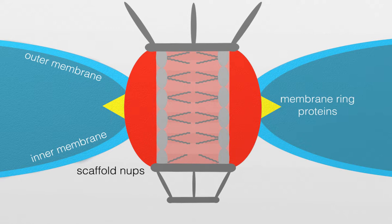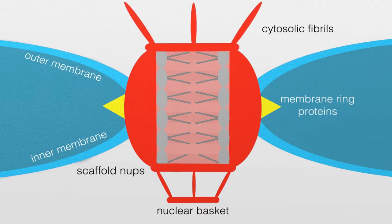On the nucleoplasmic side, the scaffold NUPs contain a nuclear basket, which helps export mRNA to the cytoplasm. On the cytosolic side, the scaffold NUPs have fibrils that extend out into the cytoplasm. These fibrils capture proteins destined for the nucleus as they pass by the pore.